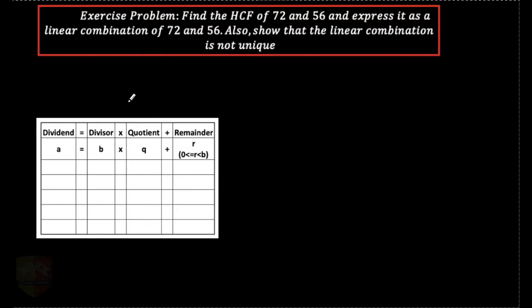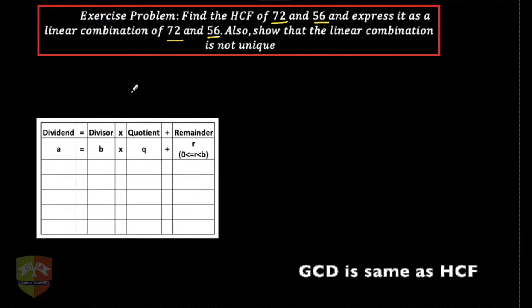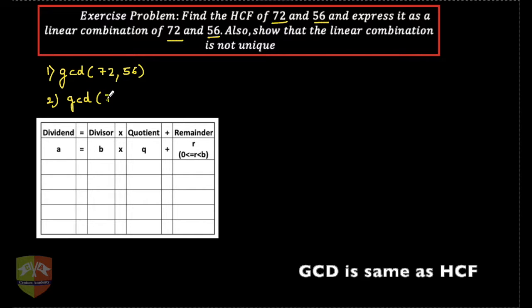Welcome to another session on finding the GCD using Euclid's division algorithm. In this question, we have to find the HCF of 72 and 56 and express it as a linear combination of 72 and 56. The first requirement is to find GCD of 72 and 56, and the second is to express GCD of 72 and 56 as a linear combination of 72 and 56.